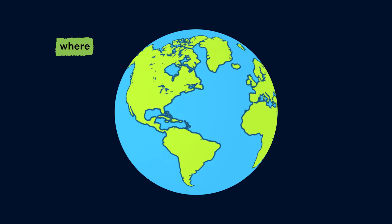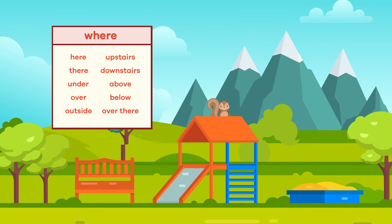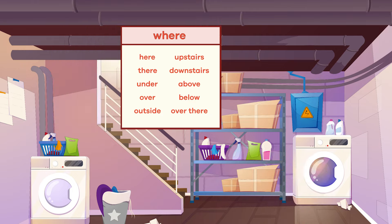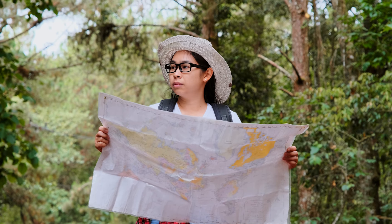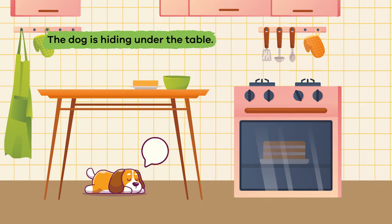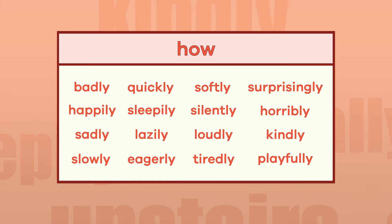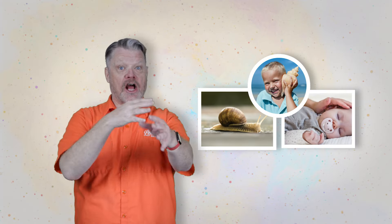Now let's talk about 'where.' Some words in this category include here, there, over, downstairs, and below. 'Where' shows the location of an action. Let's find the 'where' adverb in this sentence: 'The dog is hiding under the table.' First we find our verb, 'hiding,' and where is the dog hiding? Under the table — 'under' is the adverb!